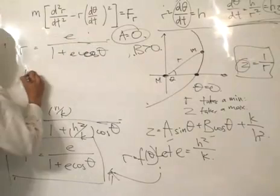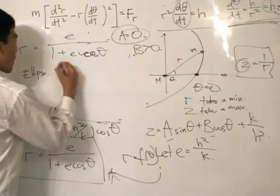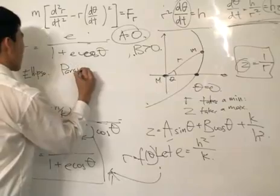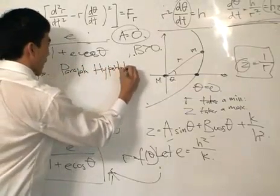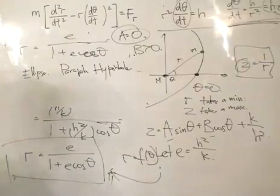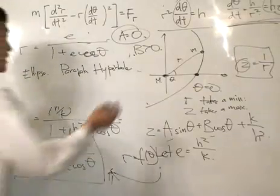This can either be an ellipse, a parabola, or hyperbola. As r is a conic section that is focused at the origin, just like the origin is over here.